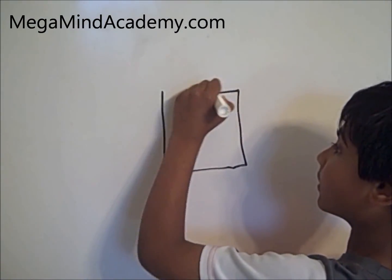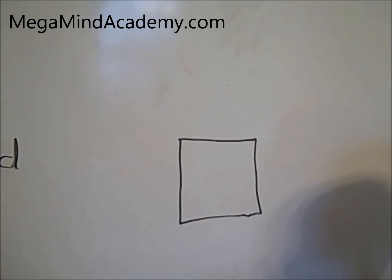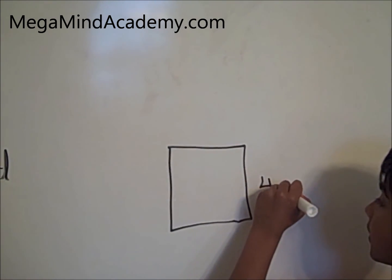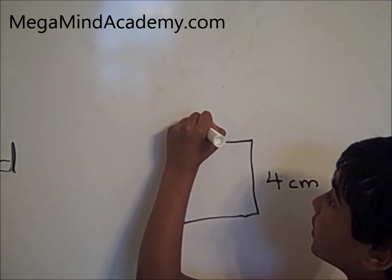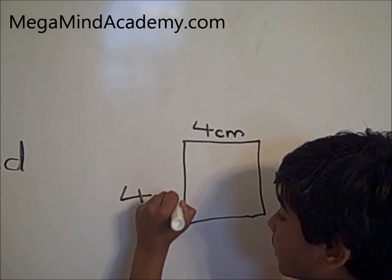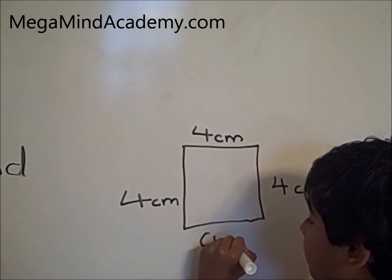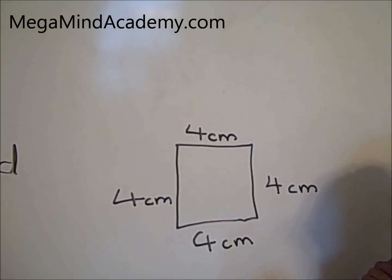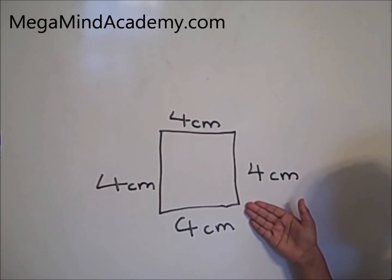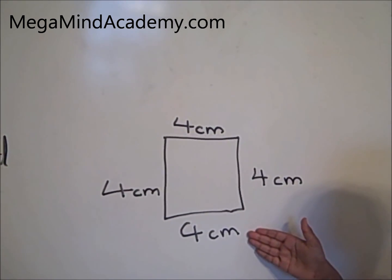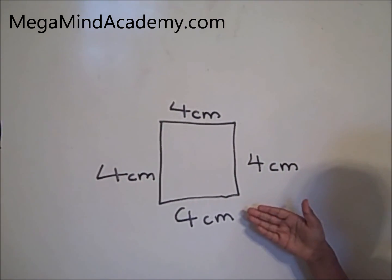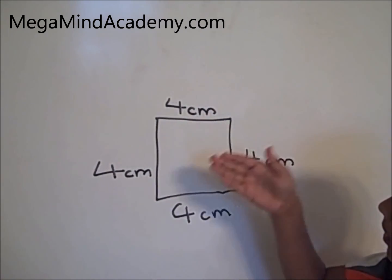Let's look at a square. A square has all sides equal. So if this is 4 cm, this will be 4 cm, this will be 4 cm, this will be 4 cm. In order to find the parameter of this square, we need to add up all the 4 sides — that meaning 4 plus 4 plus 4 plus 4.